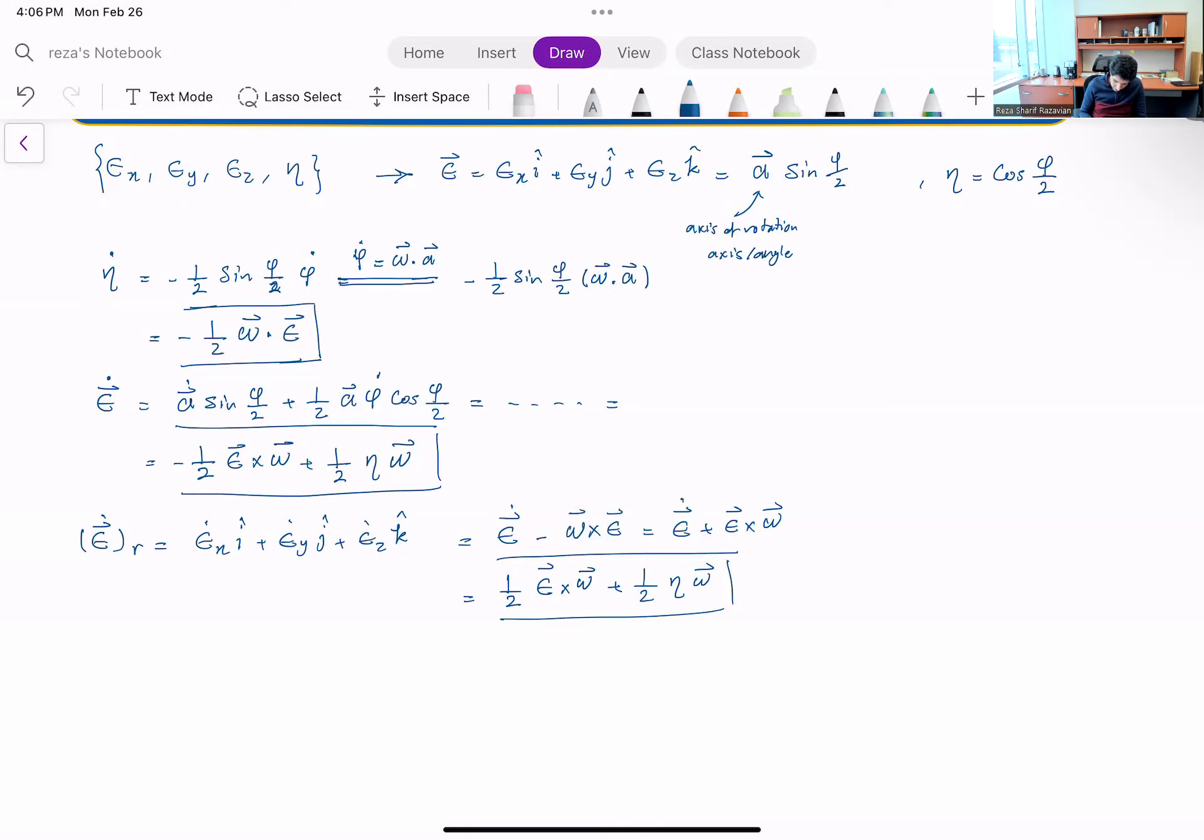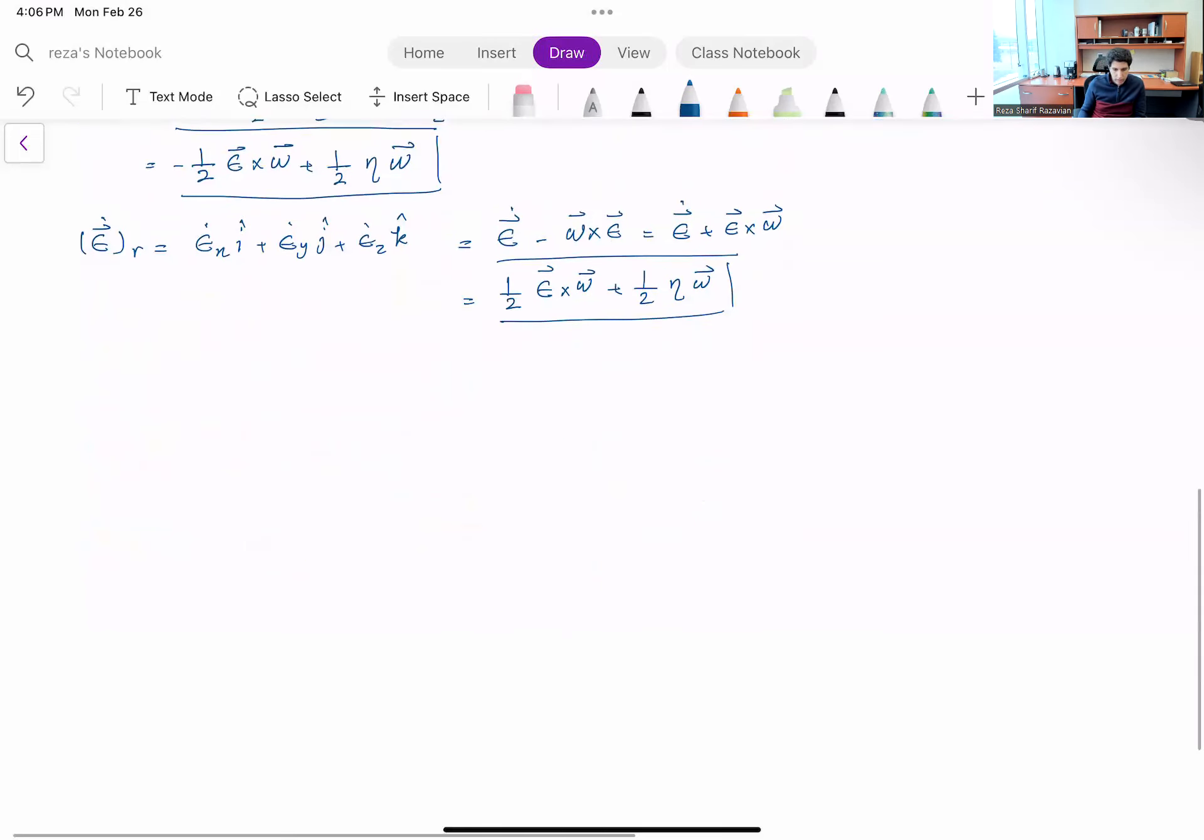And now remember this is the rate of change of these little components of epsilon along the i j k. So if I just expand this a little, instead of writing these in vector form, I just write individual equations for each component along i j k.